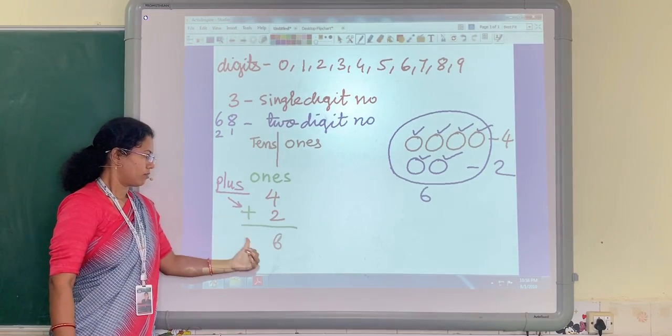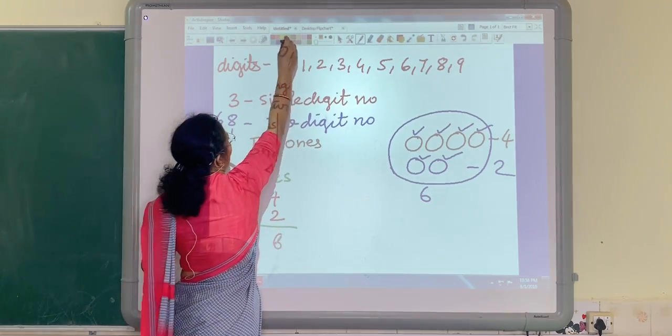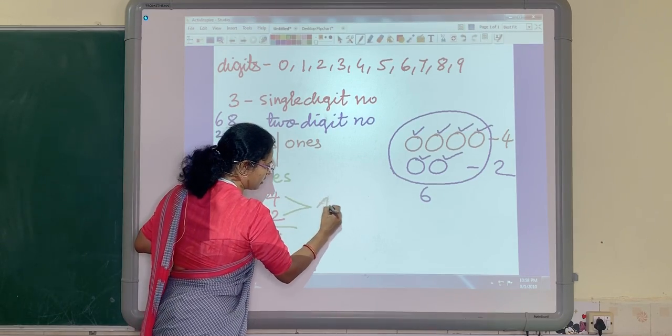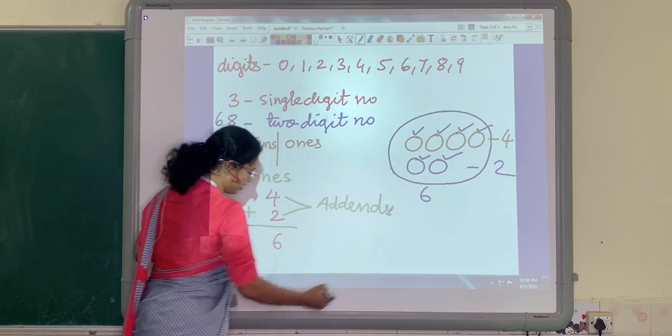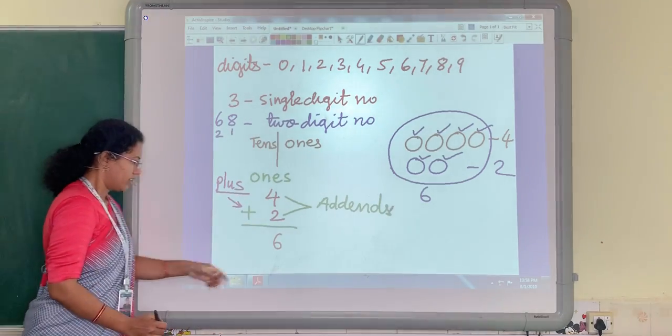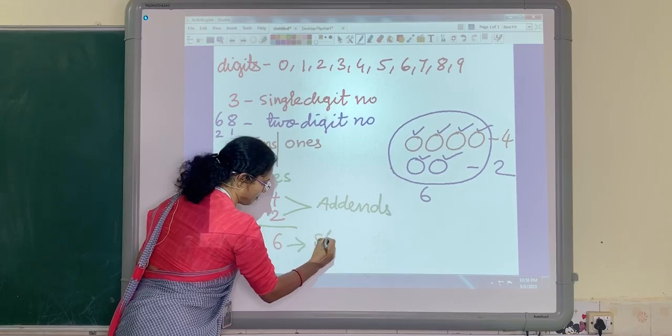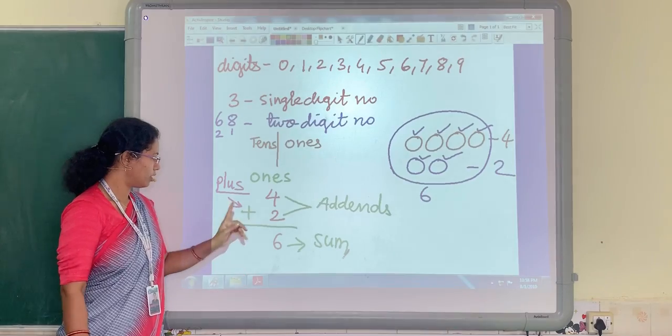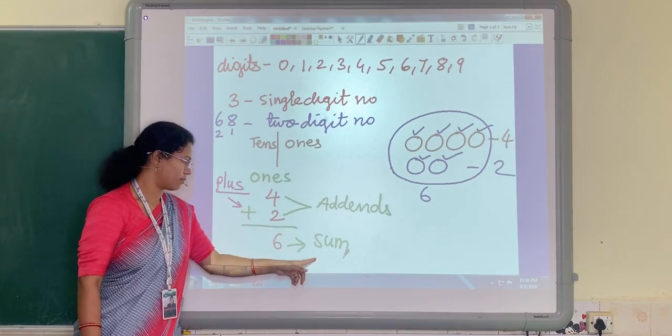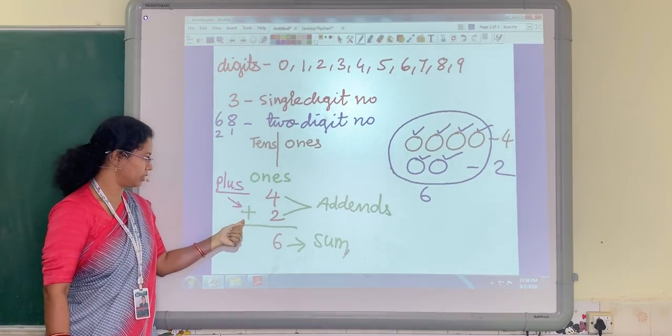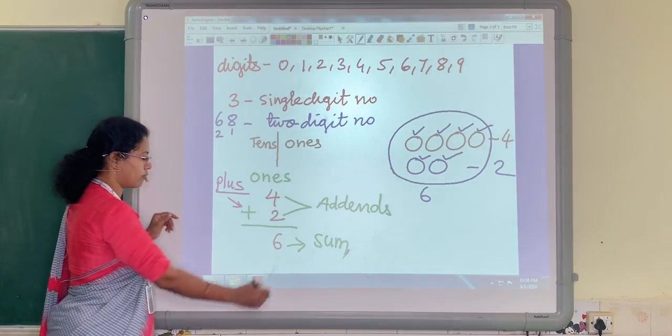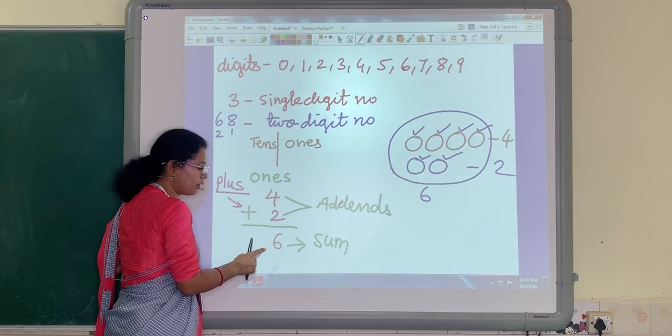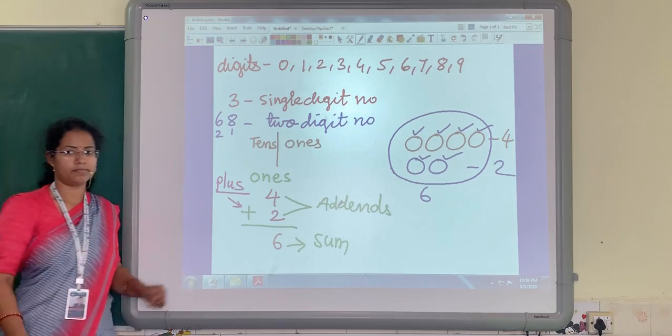Now, this number 4 and 2 are called addends. Numbers to be added in addition are called addends. And the answer is called the sum. Here, I have introduced 3 new terms for you. One is plus, addends and sum. What is plus? Plus is the sign used in addition. And what are addends? Addends are the numbers to be added. And the answer to an addition problem is called the sum.